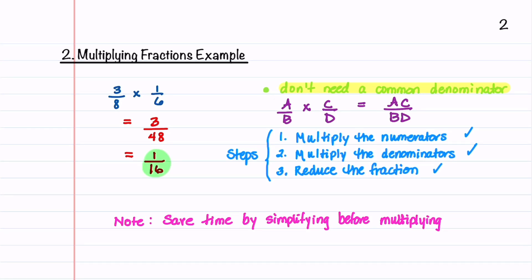Let's make a note that you can often save time by simplifying the problem before doing the multiplication. We have 3 divided by 8 times 1 divided by 6. We can cancel the 3 because it goes into 6 2 times. This gives us a value of 1 divided by 16.